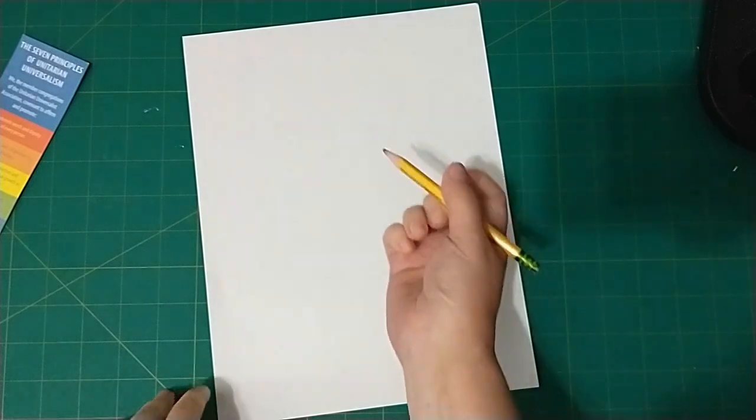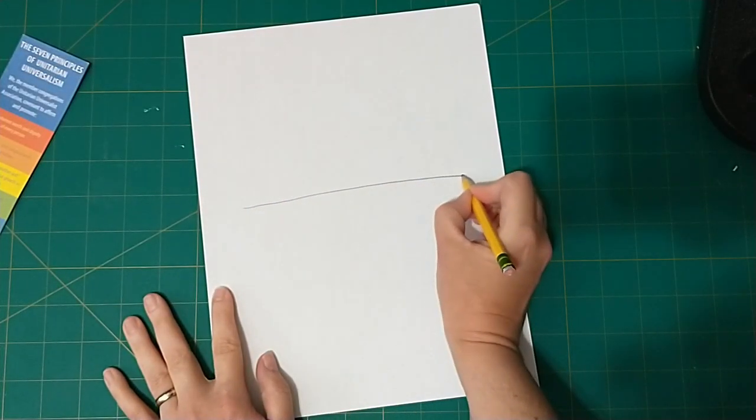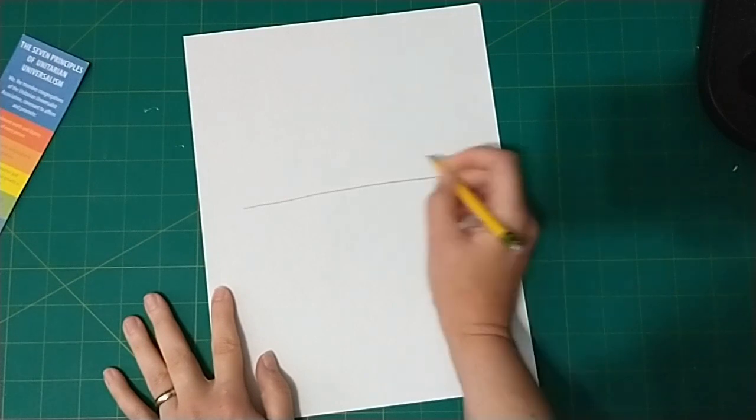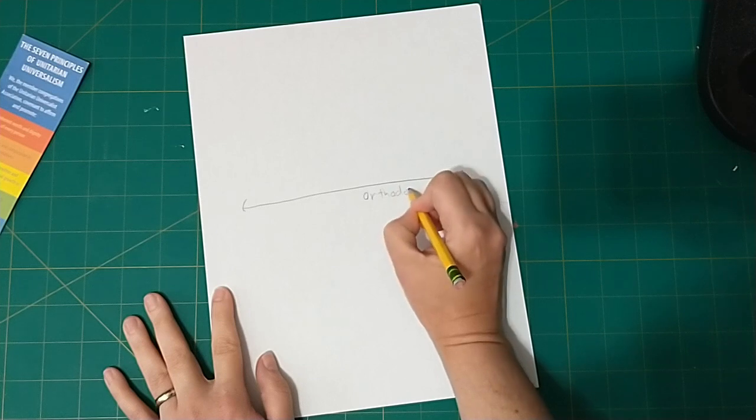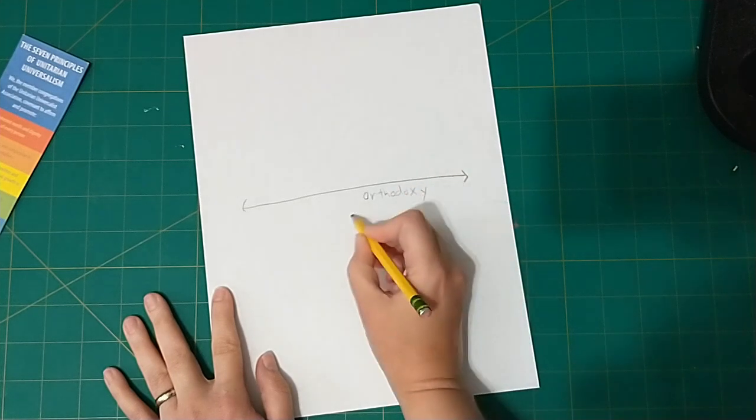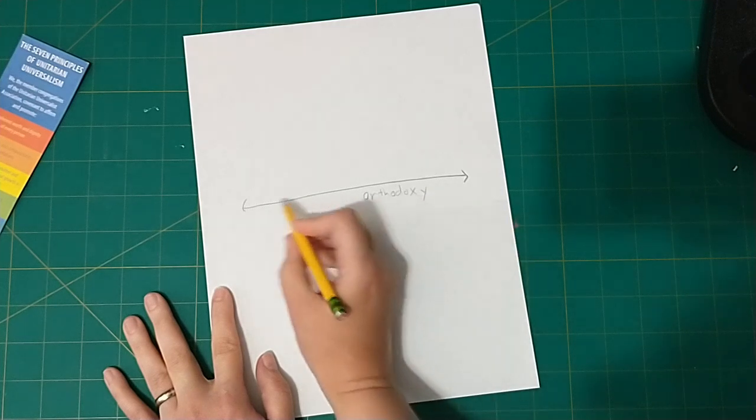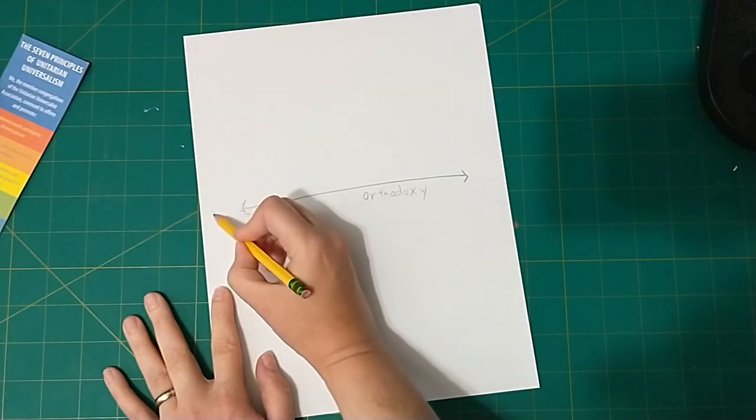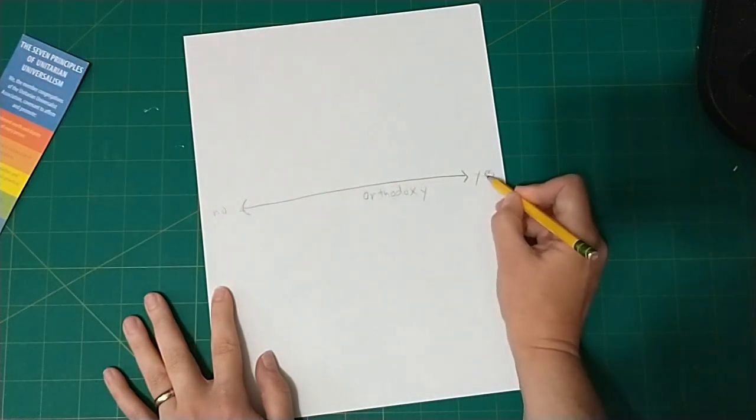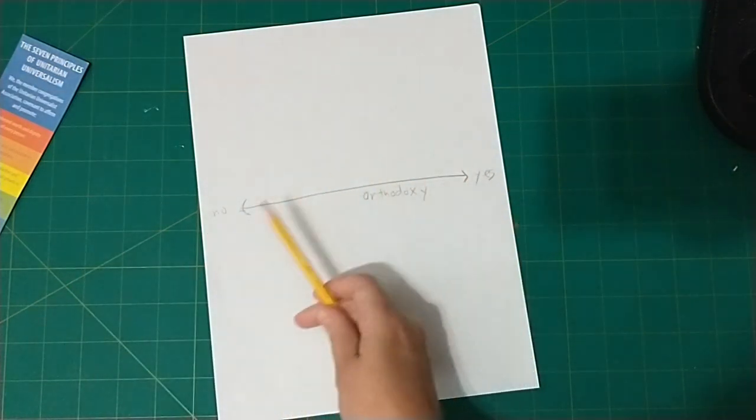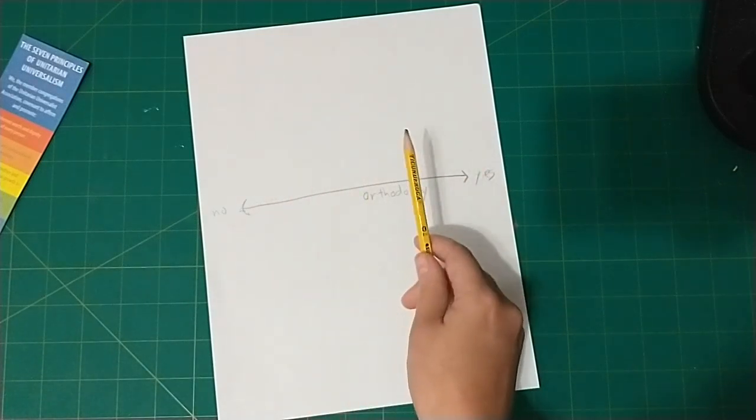Let's start with orthodoxy. Orthodoxy, you're probably familiar with from things like the Orthodox Church. And what orthodoxy means is right belief. So ortho is right, doxy is belief. And we're going to make a little scale here that goes from no to yes. And this means how important is orthodoxy? How important is it to believe the right thing?